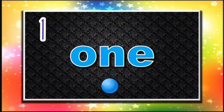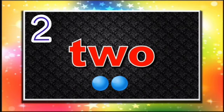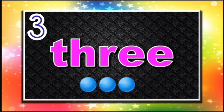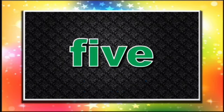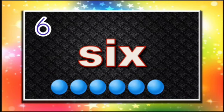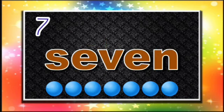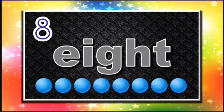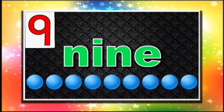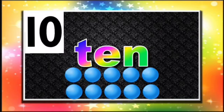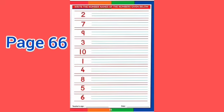Now children, let's revise the number names. One — O-N-E. Two — T-W-O. Three — T-H-R-E-E. Four — F-O-U-R. Five — F-I-V-E. Six — S-I-X. Seven — S-E-V-E-N. Eight — E-I-G-H-T. Nine — N-I-N-E. Ten — T-E-N.